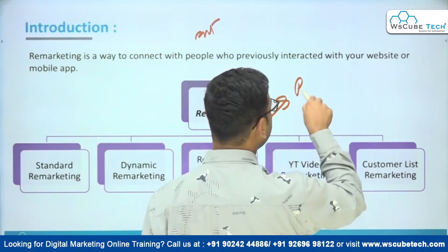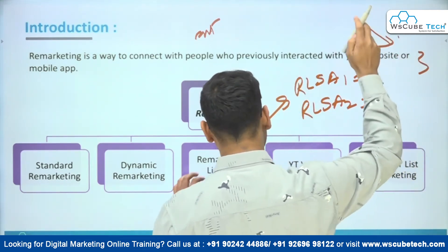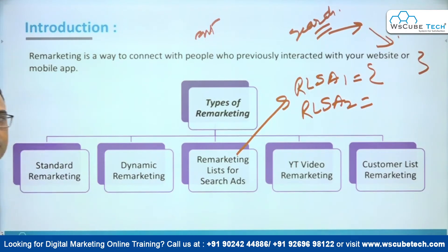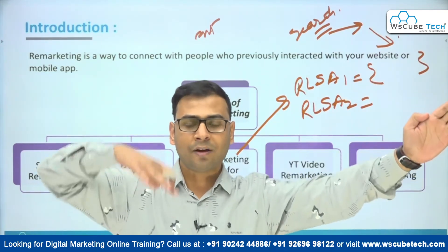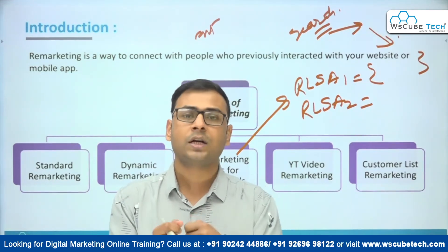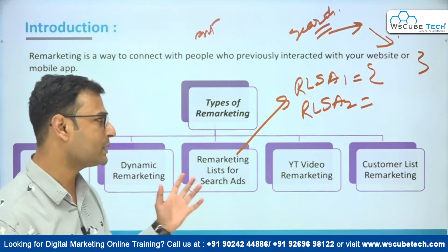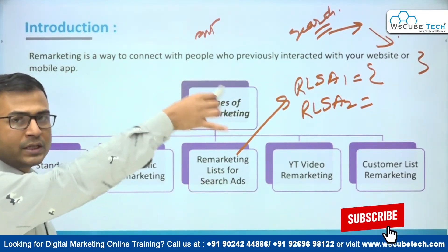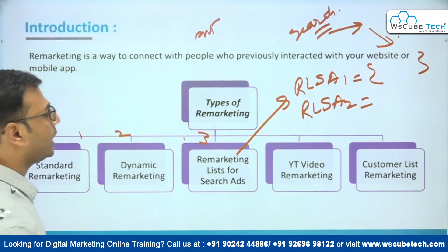Remarketing List for Search Ads (RLSA) involves creating different lists used to remarket through search ads. You create a search campaign targeting people who have already visited your website. If they previously entered keywords in your ad group and visited your site, and they are now searching those keywords again, you tell Google: these people have already interacted with my website, so I am willing to bid more for them. You create campaigns specifically for such audiences.